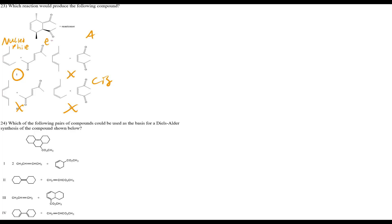Question 25: this compound doesn't undergo a Diels-Alder reaction because it cannot adopt the cis conformation — answer B. For open-chain dienes, you can rotate around the single bond to achieve cis. But for ring systems, you can't twist the ring without breaking it — you're locked in trans and can never achieve the cis conformation needed for Diels-Alder.